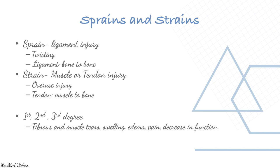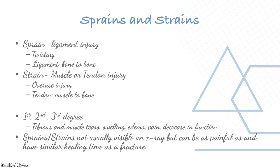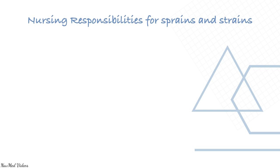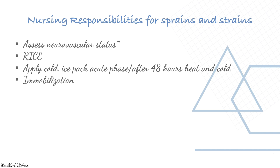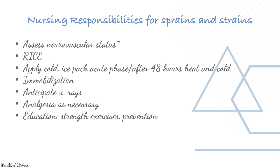Tendon overuse injuries can be first, second, or third degree — fibrous and muscle tears with swelling, edema, pain, and decrease in function. Sprains and strains are not hugely visible on X-ray but can be as painful and have similar healing time as a fracture. Management includes neurovascular status assessment, RICE treatment, immobilization, X-rays, analgesia, education, assistive devices, proper crutch technique, splint or cast care, and appropriate rehab and strengthening. Returning to normal activities too early can increase the chance of re-injury.